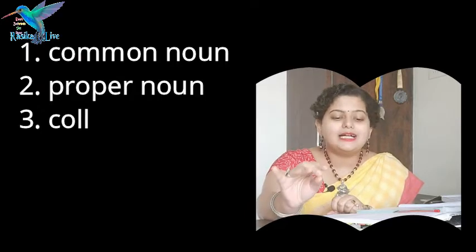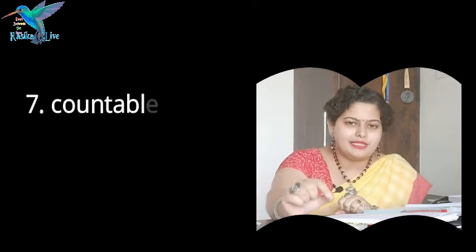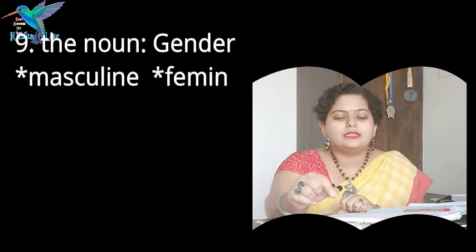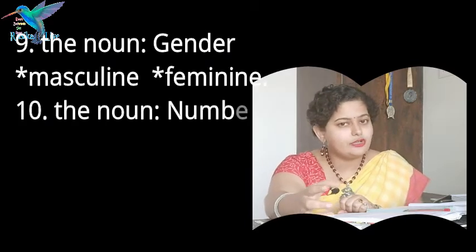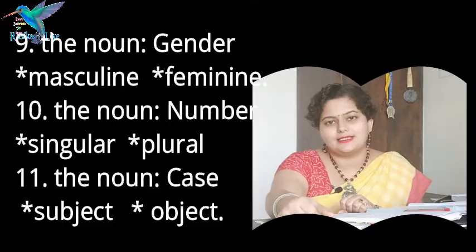Today I am going to share with you the 11 kinds of nouns. Each and every kind is really very interesting to learn. Let's count the names on the screen: common noun, proper noun, collective noun, abstract noun, compound noun, possessive noun, countable noun, uncountable noun, noun with gender (masculine or feminine), noun with number (singular or plural), and noun with case (subject or object in the sentence). So there are 11 kinds of noun.